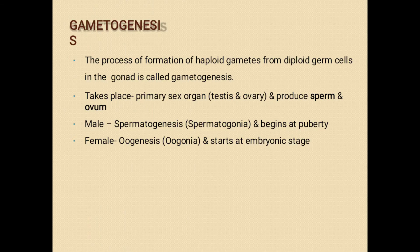The next is gametogenesis. Gametogenesis means the formation of gametes. The process of formation of haploid gametes from diploid germ cells in the gonad is known as gametogenesis. It takes place in the primary sex organs — that is in testes and in ovaries. Testes produce sperms and ovaries will produce the ovum.